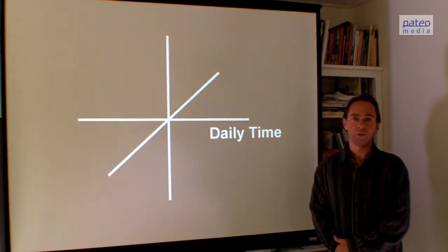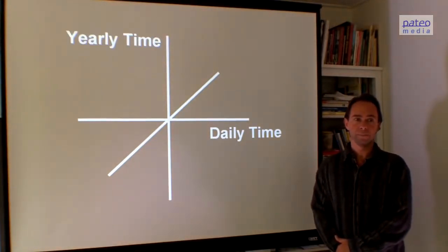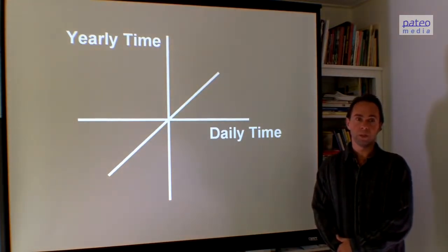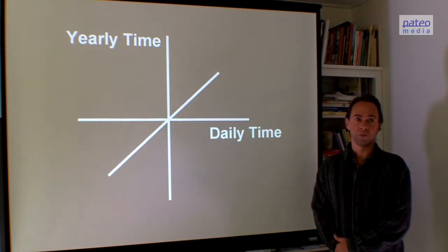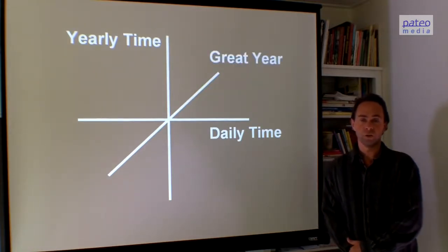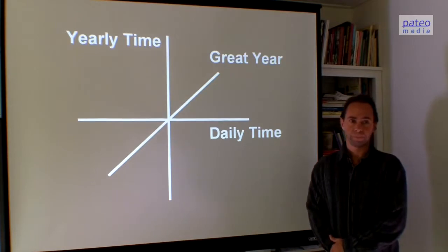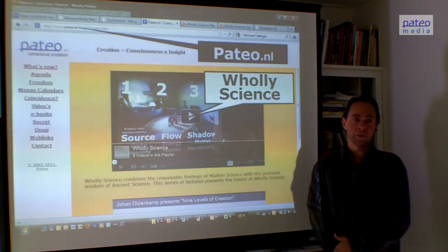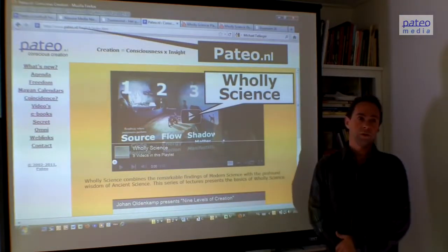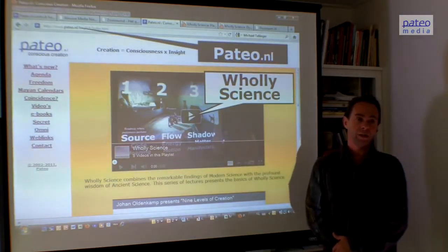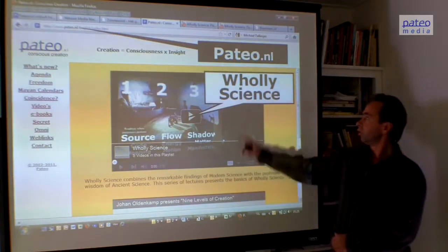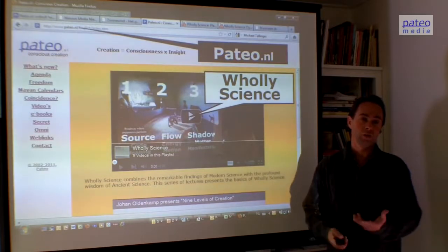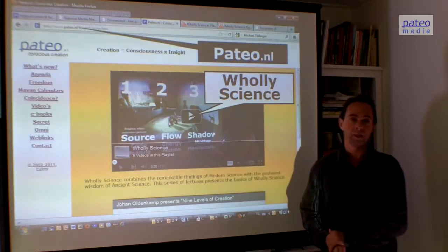Let us look at those three dimensions. The first one is the daily time. The second one is the yearly time. And we'll see that the pyramids are built to represent the third dimension of time, which is the Great Year. Plato used to call it the Great Year. In order to understand the basics, please go to pateo.nl, the English section, and there you find a video presentation called the Holy Science. Please watch that first to understand the dynamics of energies.